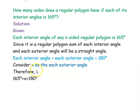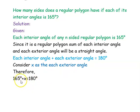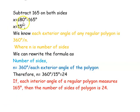We will consider x as each exterior angle. Since the interior angle is given as 165 degrees, we substitute into the formula: 165 degrees plus x equals 180 degrees. Now, subtracting 165 degrees from both sides, x equals 180 degrees minus 165 degrees, that is 15 degrees.